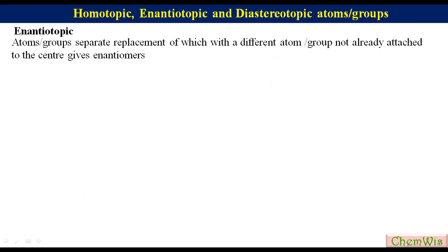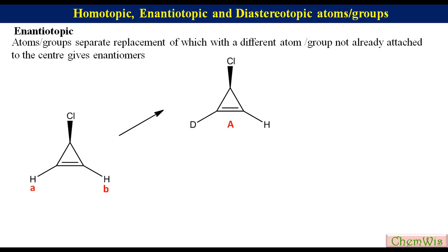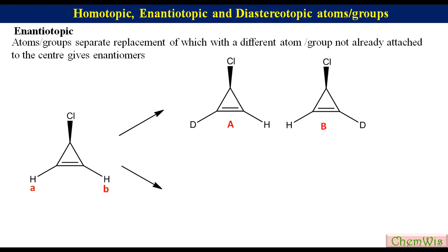Let's have the example of 3-chlorocyclopropene, in which we have to determine the relation between protons A and B. Replacement of HA with deuterium gives structure A, while that of HB gives structure B. Structure A has S configuration while structure B has R configuration, so these are enantiomers. These are non-superimposable mirror images and thus enantiomers. So HA and HB are enantiotopic.